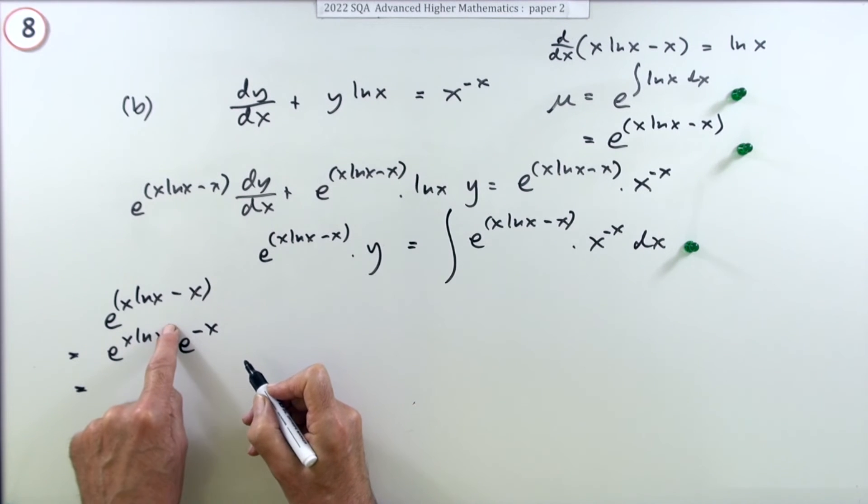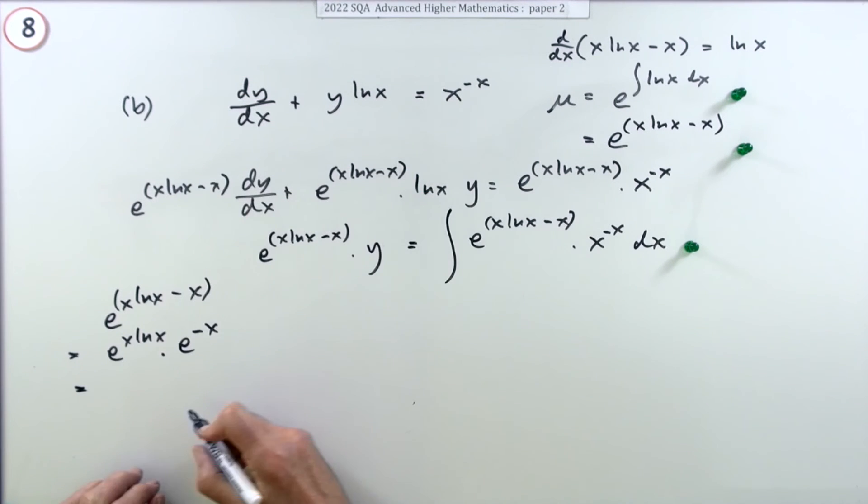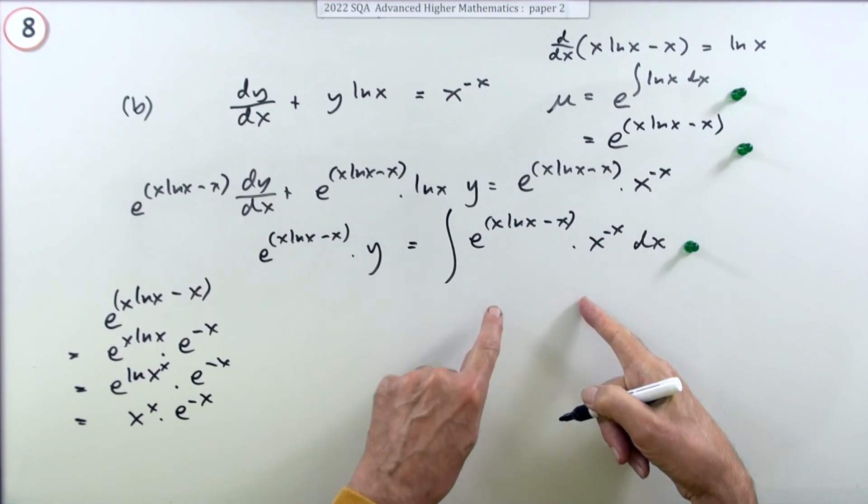Now if that x was popped inside it would expose that logarithm to e, and of course those are inverses so they would just cancel out. So I'll do that next. So e^(ln(x^x)) times e^(-x). Popping that in as a power times e^(-x). Now that they're exposed to each other, boom, away they go and you're left with x^x * e^(-x).